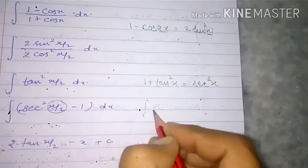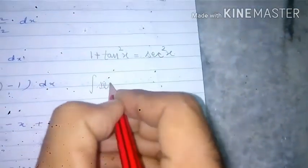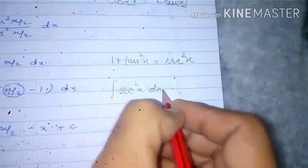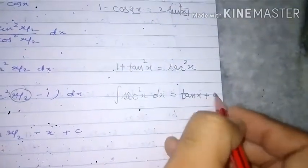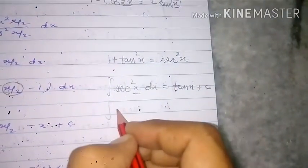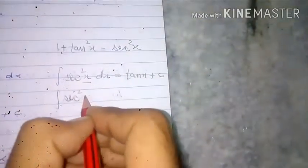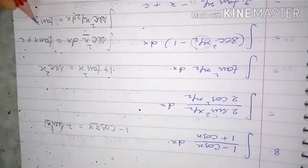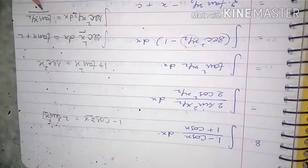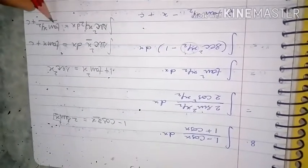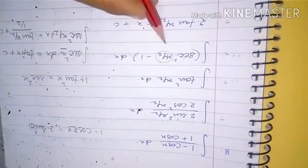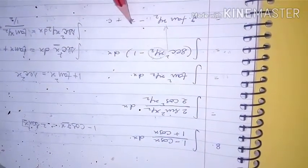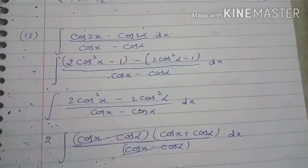To clarify: the formula is ∫sec²x dx = tanx + c. If x is replaced by any linear term, say x/2, then ∫sec²(x/2) dx = tan(x/2) divided by the coefficient of x (which is 1/2), giving 2tan(x/2). The integral of -1 is -x. So the final answer is 2tan(x/2) - x + c. Now moving to the next question.